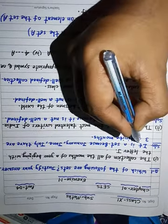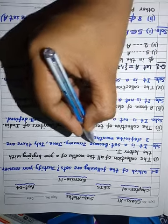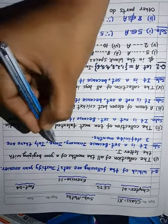Solution is, it is a set because January, June, July, there are 3 definite months.